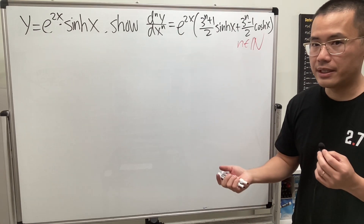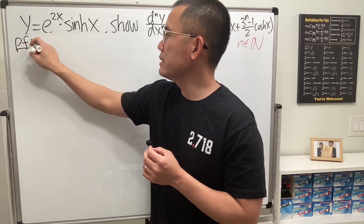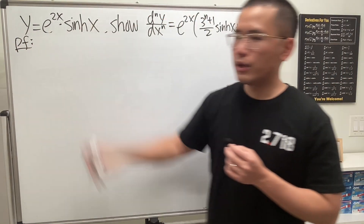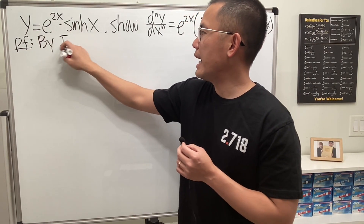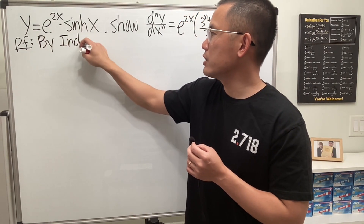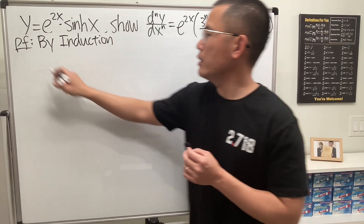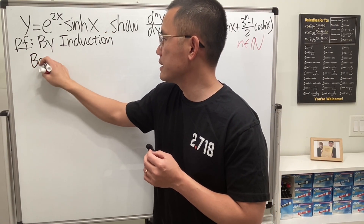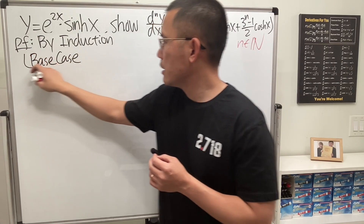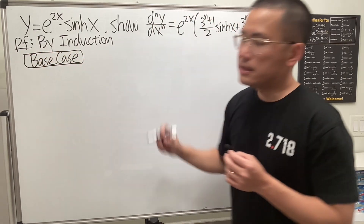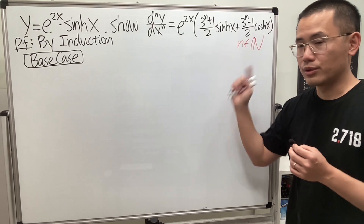To show this is true for all natural numbers n, we will use mathematical induction — that's the usual way to go about it. Let's put down the proof, indicating specifically that it's by induction. We start with our base case, which is n equal to one for natural numbers.